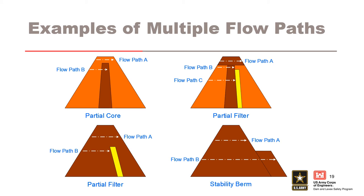At the bottom left, this is a homogeneous dam with a partial height inclined chimney filter. Flow path A is above the elevation of the filter and has an unfiltered exit for concentrated leak erosion at the downstream face. Flow path B has a filtered exit at the inclined chimney filter. At the top right, this dam has three design changes that must be considered. Flow path A has an unfiltered exit for concentrated leak erosion at the downstream face. Flow path B has concentrated leak erosion through the thin impervious core, but the pervious shell may or may not provide a filtered exit; if the pervious shell has excessive fines, common cause cracking may occur, resulting in an unfiltered exit. Flow path C is concentrated leak erosion through the impervious core and has a filtered exit at the inclined chimney filter.